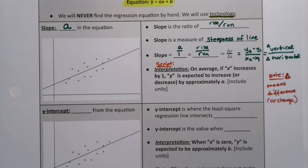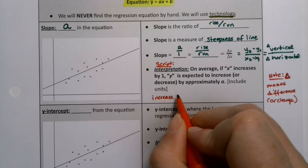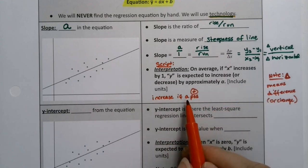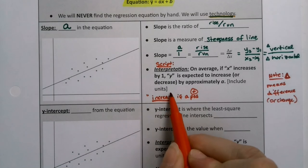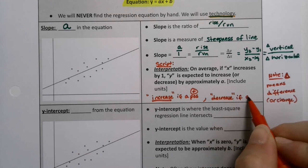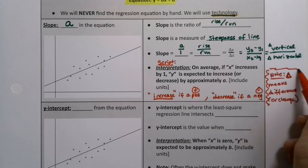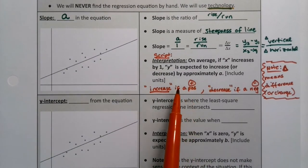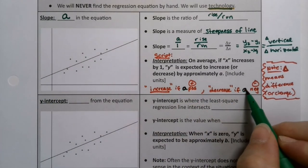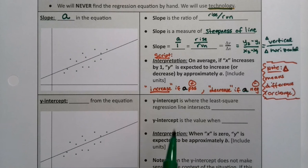Then y is expected to increase or decrease by approximately a. Now you don't write both of those words. You'll say increase if the slope is positive. If you have a positive slope, then you'll use the word increase. And you'll use decrease if a is negative, if your slope is negative. If your a is positive, if your slope is positive, you're going to use the word increase. If your a is negative, you'll use the word decrease. But you will not write this with the parentheses when you do it yourself.